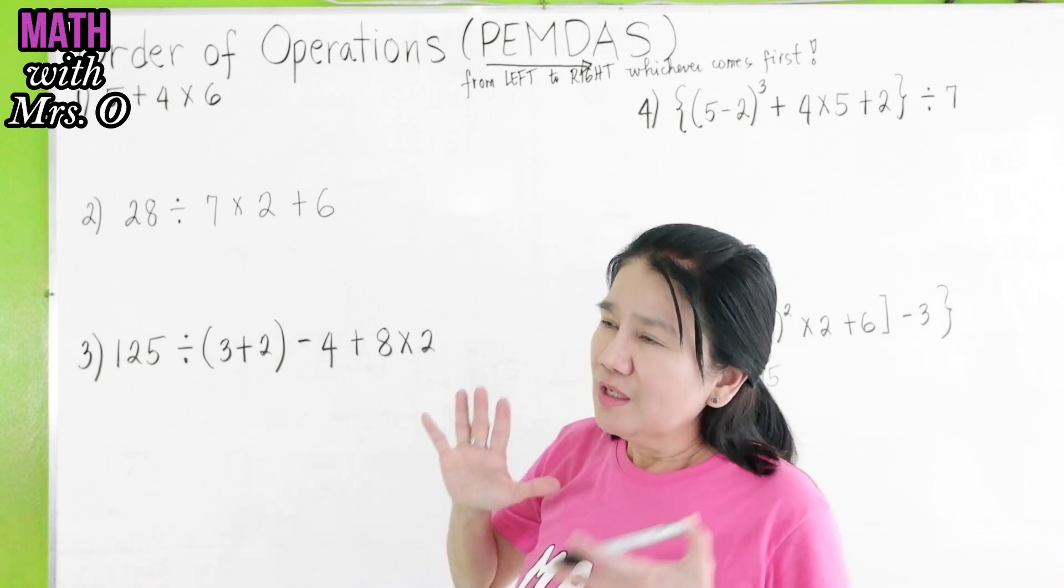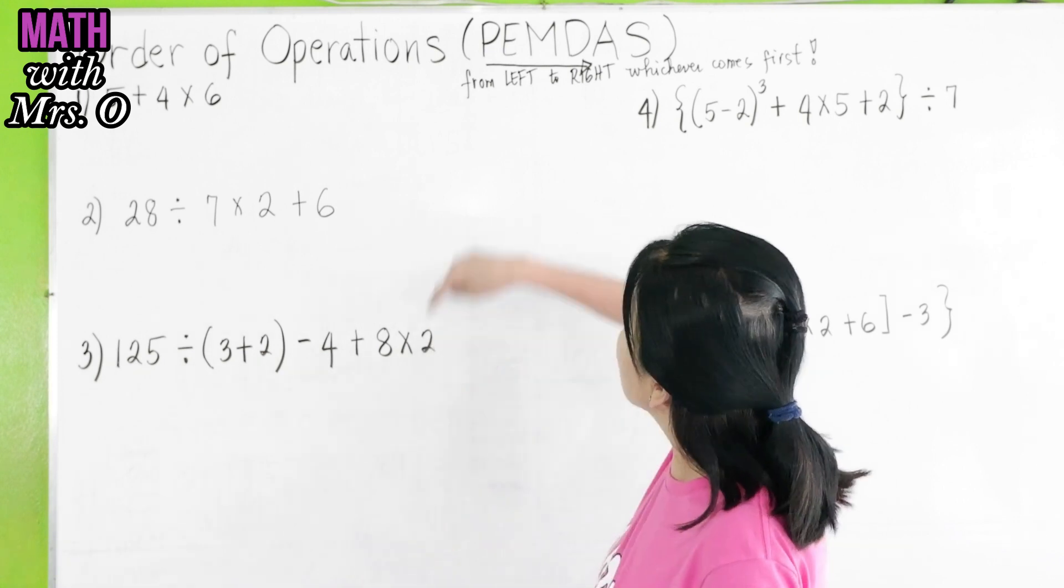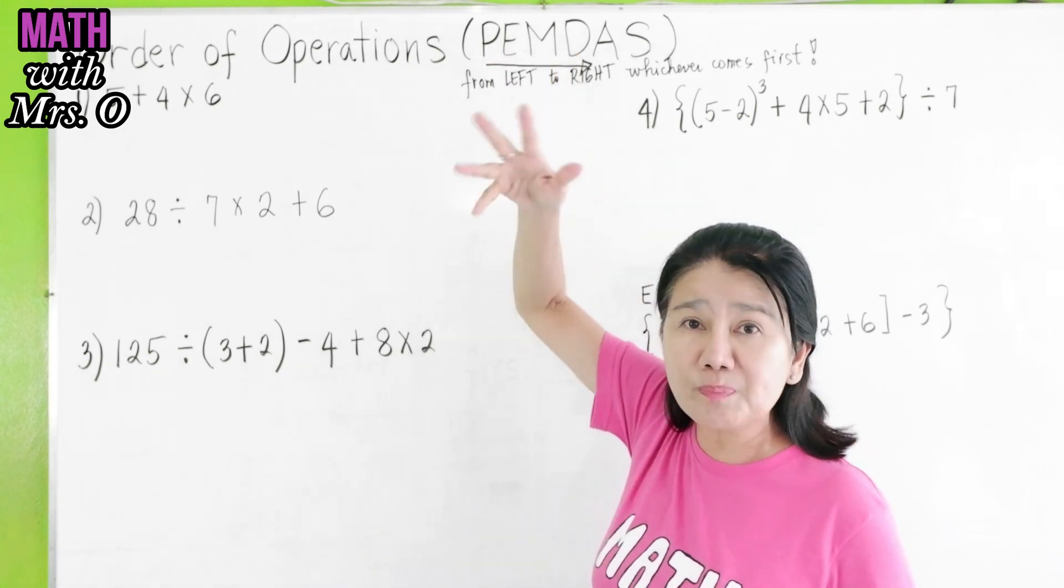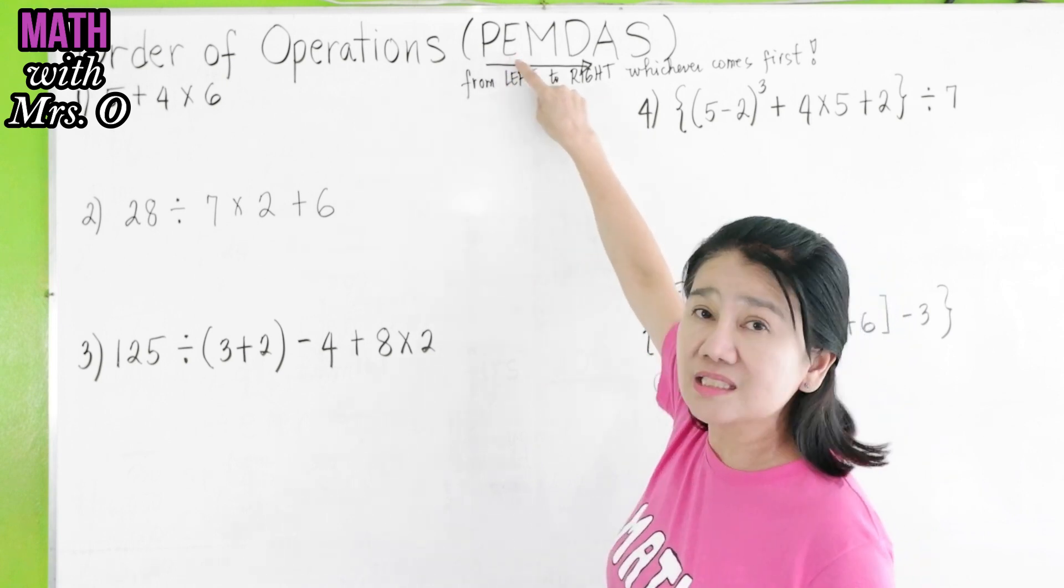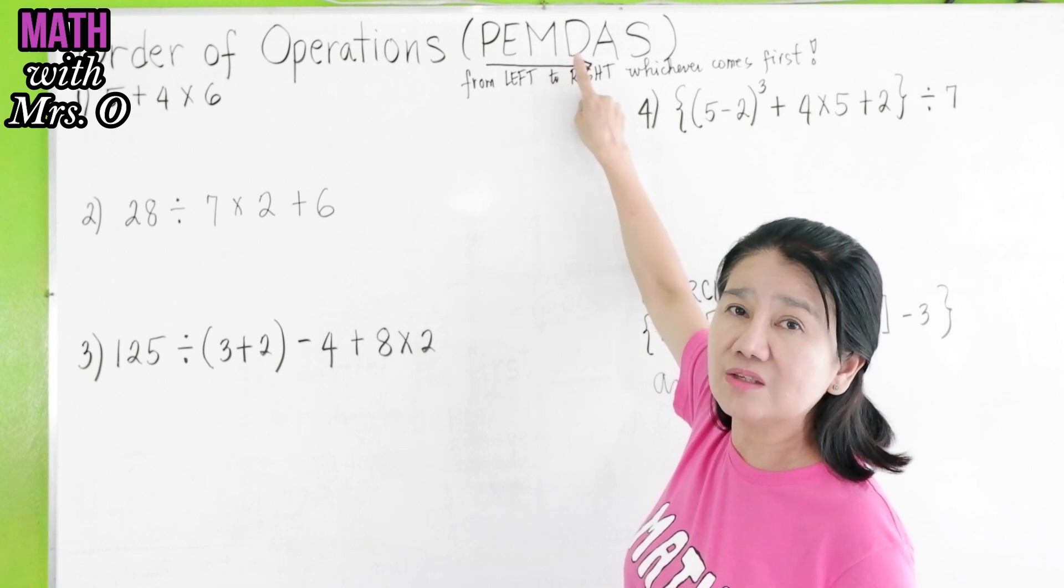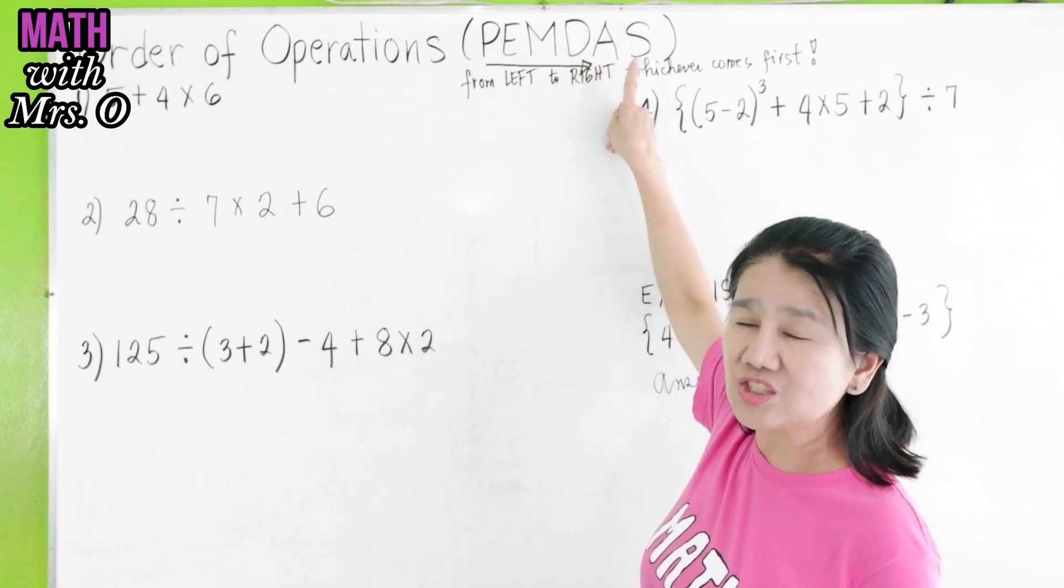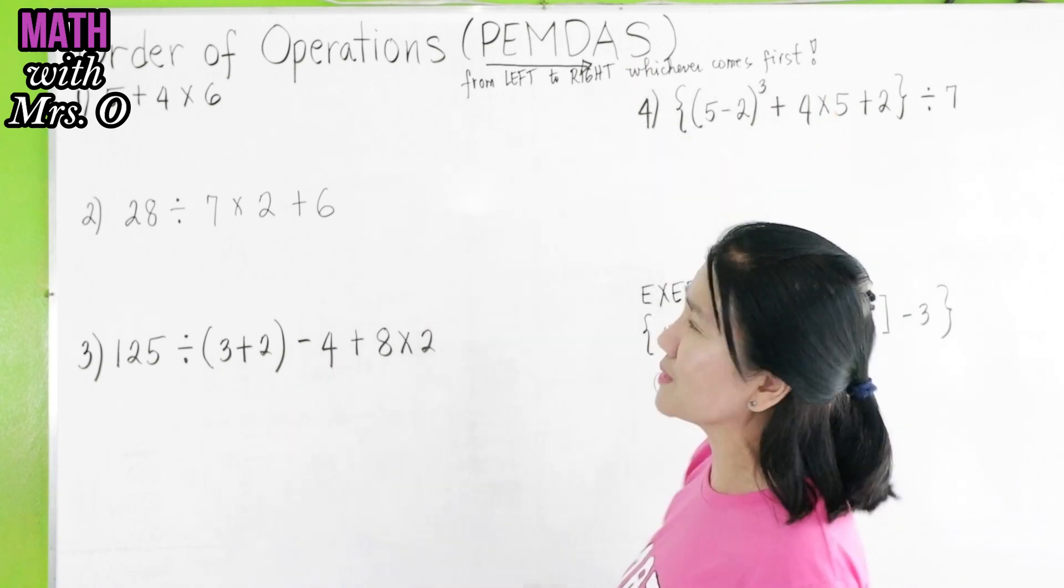So, for Order of Operations, we always use PEMDAS. PEMDAS means parentheses or groupings, brackets or groupings. E stands for exponents. M, multiplication. D, division. A, addition. S, subtraction. From left to right, whichever comes first.